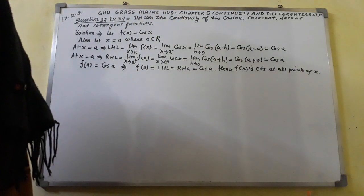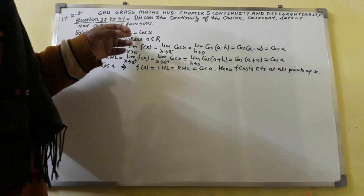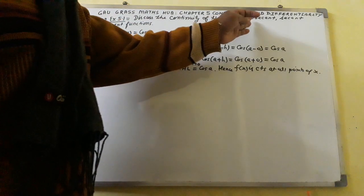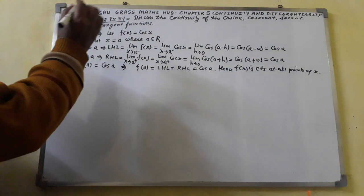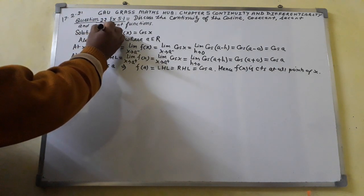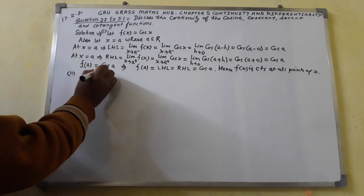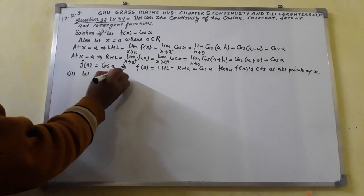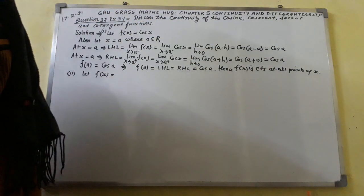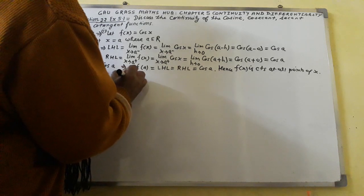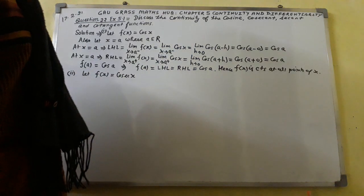This is the first part, proving continuity of cosine. Now I shall discuss continuity of cosecant — this is part (i). For part (ii), let f of x equal to cosecant, i.e., cosec x.